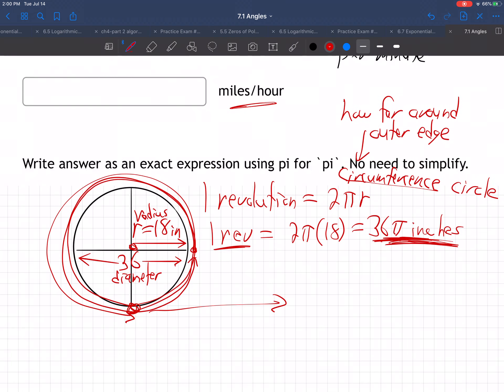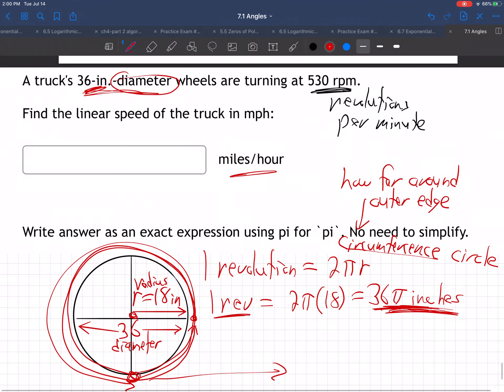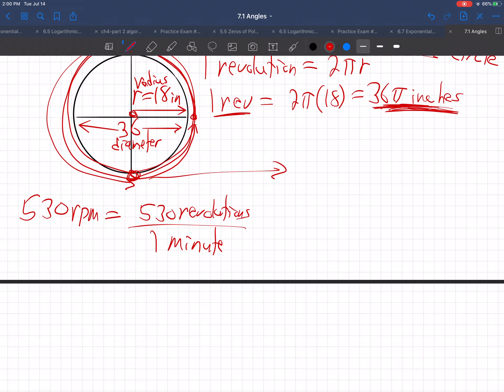So one revolution, it's doing 530 revolutions per minute. Let's bring that down here. 530 RPM, that equals 530 revolutions per one minute. You write that as a fraction, right? 530 revolutions goes around 530 times every minute. Well, this is basically now just a big unit conversion problem. Let me go over here where we have a little more room.